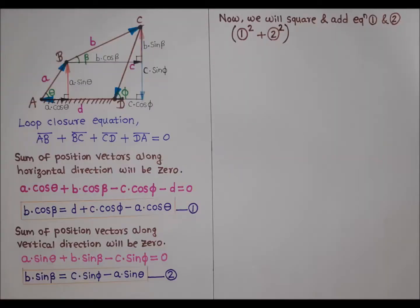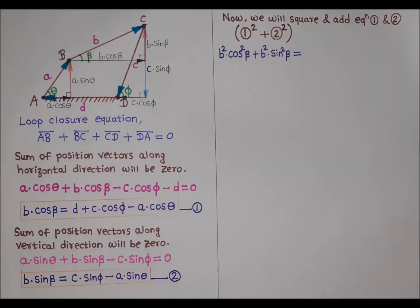Now we will square and add Equations 1 and 2 to eliminate angle beta and obtain a relation between theta (input link angle) and phi (output link angle). On the left-hand side, squaring and adding gives B²·cos²(beta) + B²·sin²(beta). Taking B² common, the multiplier becomes cos²(beta) + sin²(beta) = 1. This is how beta is eliminated.